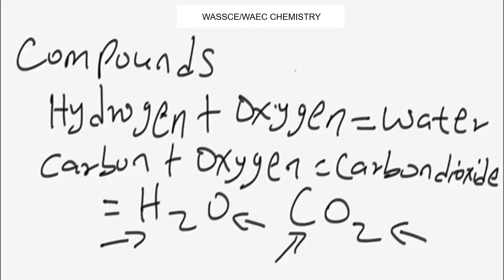Note that a compound could be ionic or covalent in nature. A compound is said to be ionic when the reaction is between a metal and a non-metal. For example, sodium hydroxide — a metal combining with a non-metal — is an ionic compound.